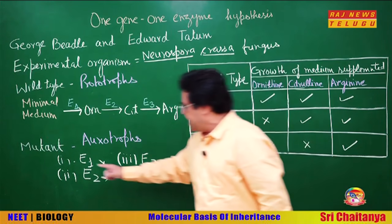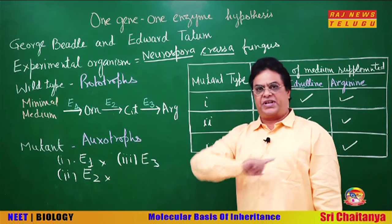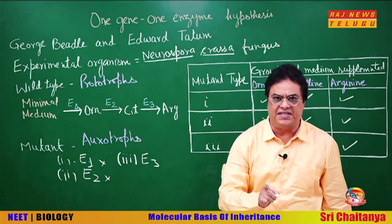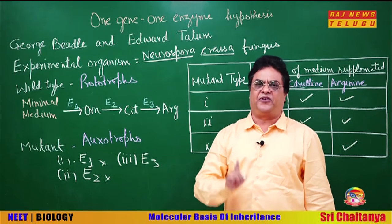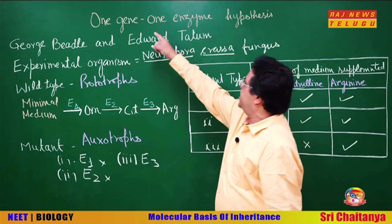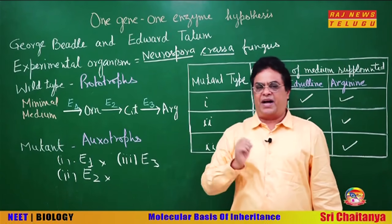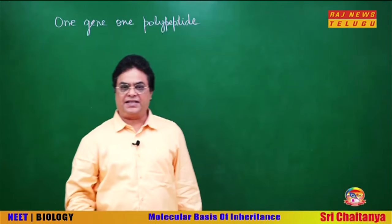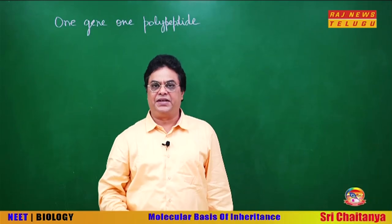So you can see that mutation in one gene results in non-synthesis of one enzyme. This proves the one gene one enzyme hypothesis. For this path-breaking work, Beadle and Tatum were awarded the Nobel Prize.